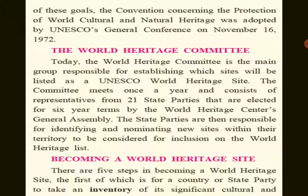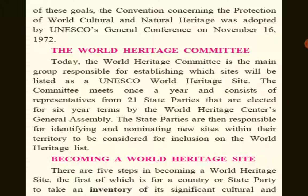So, World Heritage Committee — how does it form? It is the main group that decides which sites are on the UNESCO World Heritage Site list. This committee meets once a year, where there are 21 state parties and representatives who have been elected to the National Council.